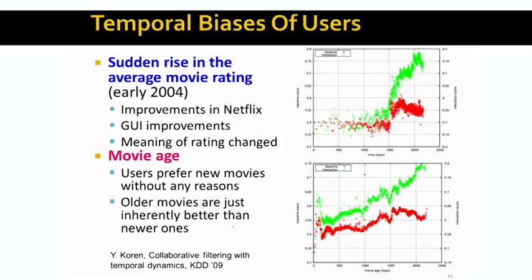So here's the idea. One thing that we haven't yet used in our model is the idea that ratings change over time. So for example, people analyze the data and notice that, for example, if we plot time versus the average score of a movie, we see that in around 2004, the ratings jumped almost in a discontinuous way.